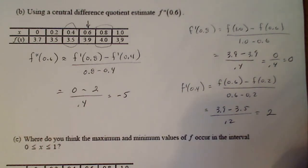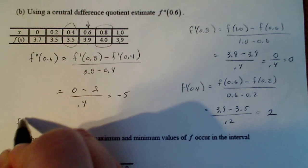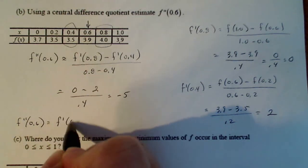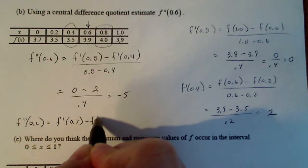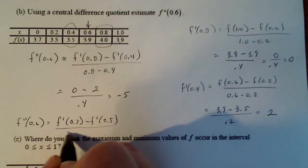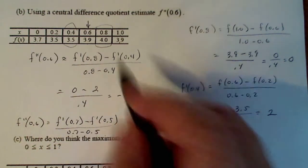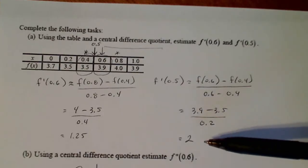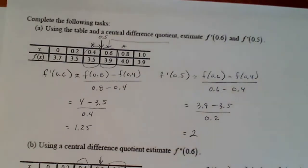I'm thinking that you could have said f double prime of 0.6 is also f prime of 0.7 minus f prime of 0.5, all divided by 0.7 minus 0.5. And then you could have used the number that we found up here for 0.5 and saved yourself some work, right?